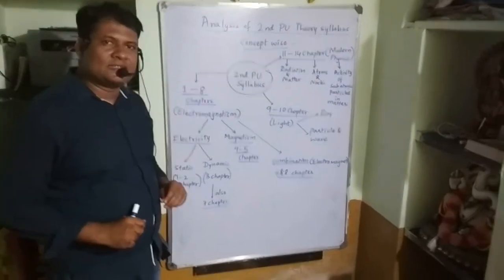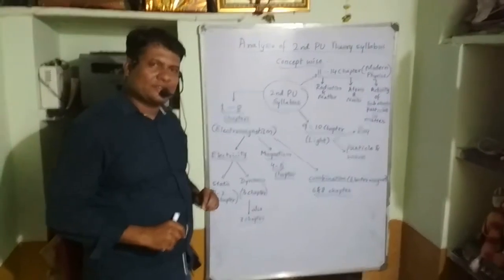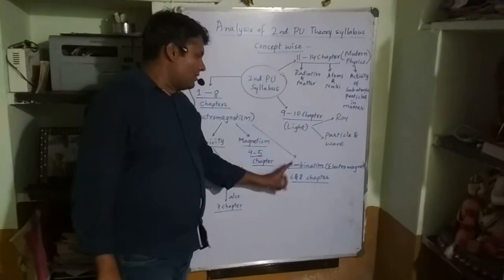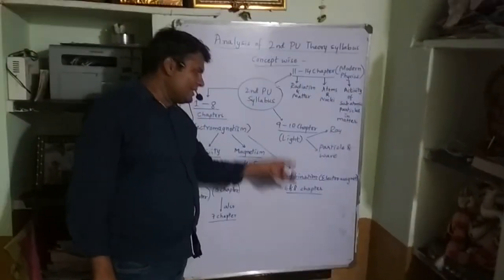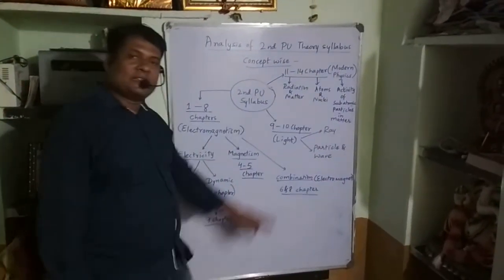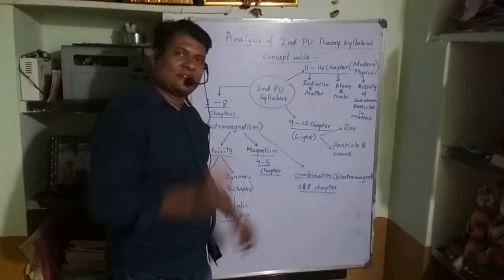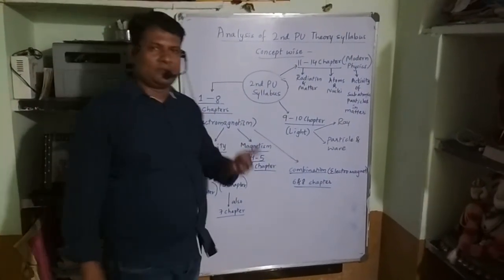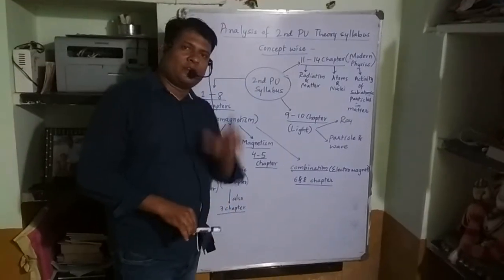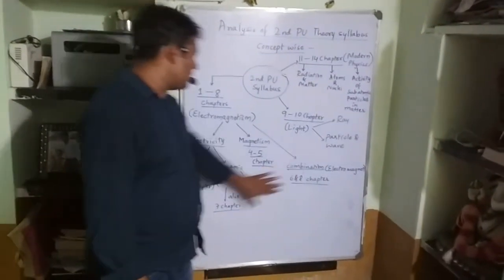The second sub-part, Magnetism, contains Chapters 4 and 5 — Chapter 4 is Moving Charges and Magnetism, and Chapter 5 is Magnetism and Matter. The combination of Electricity and Magnetism contains Chapters 6 and 8: Chapter 6 is Electromagnetic Induction, where electricity is generated due to a magnet moving inside a coil, and Chapter 8 covers types of electromagnetic waves.